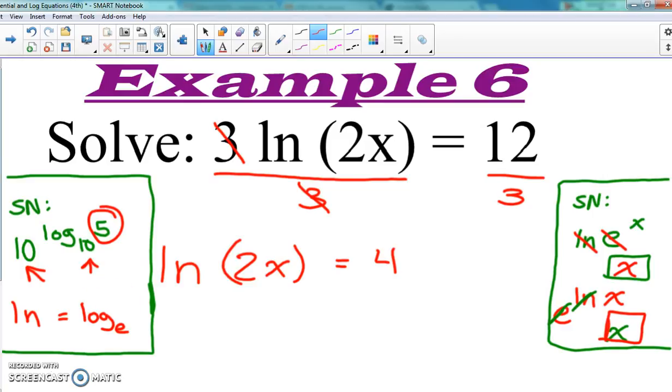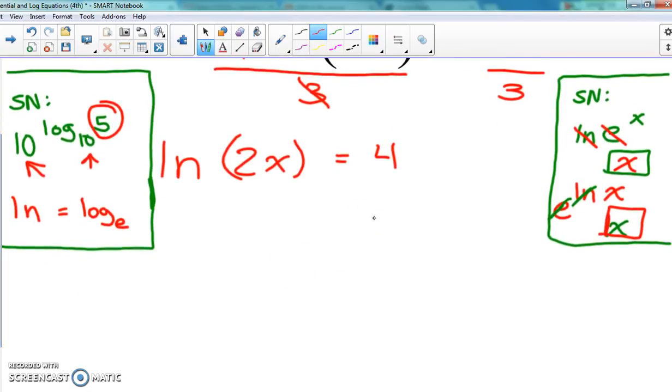What we're going to do here is take e and make it our base number, raising both parts as our exponents. So e to the natural log of 2x equals e to the 4. Whatever we do to one side of the equation, we do to the other side. As long as we do the same thing on both sides, it doesn't change the equation.